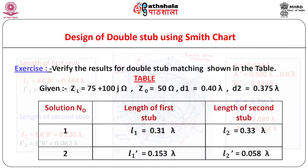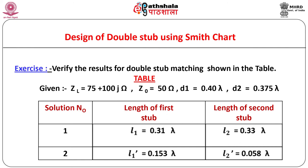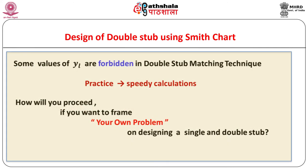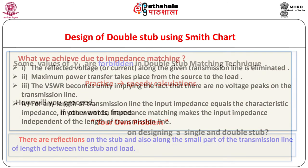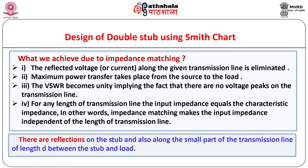The complete solution on the Smith chart will look as shown. As an exercise, you may try to verify the results for double stub matching shown in the table. The procedure may appear lengthy, however after practice you will be able to do all the steps speedily. Due to impedance matching, the reflected voltage or current along the given transmission line is eliminated, maximum power transfer from source to load is achieved, and the VSWR becomes unity implying there are no voltage peaks on the transmission line. For any length of transmission line, the input impedance equals the characteristic impedance — impedance matching makes input impedance independent of transmission line length.